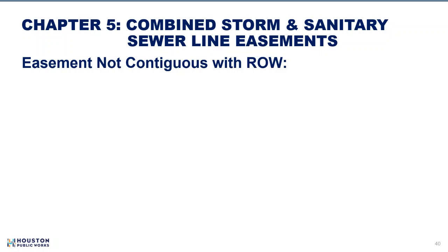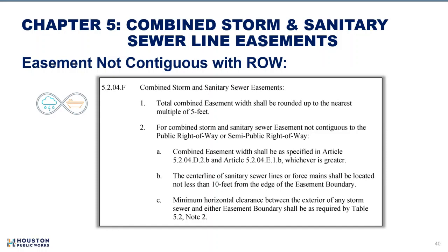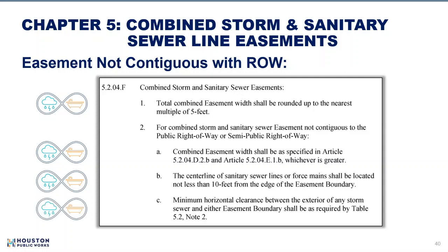The previous version of the combined storm and sanitary sewer easement section was difficult to follow. The standard review committee improved these requirements as follows: all combined easements shall be rounded up to the nearest multiple of 5 feet. For combined storm and sanitary sewer easements not contiguous with the right-of-way, minimum easement width shall be according to the appropriate storm or sanitary paragraph. The center line of sanitary sewers must be not less than 10 feet from the easement boundary. The horizontal clearance between the exterior of any storm sewer and either easement boundary is as required by Note 2 of Table 5.2.